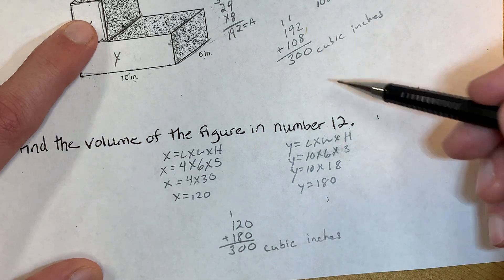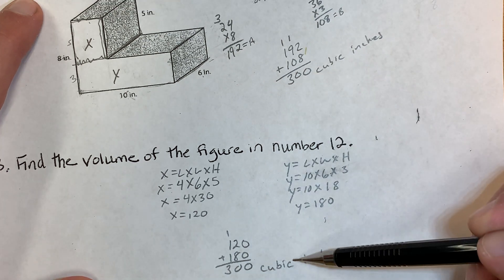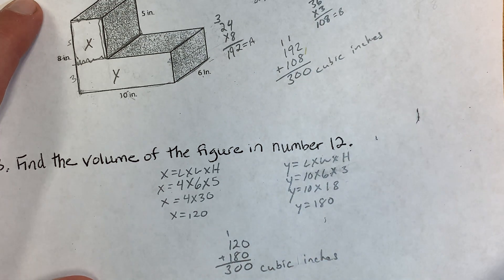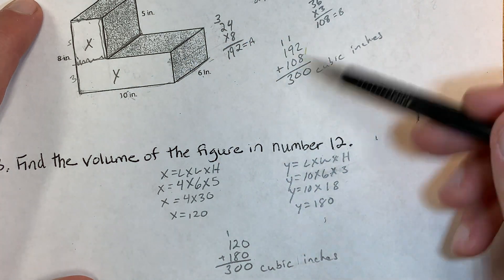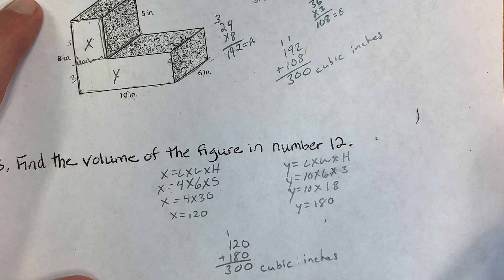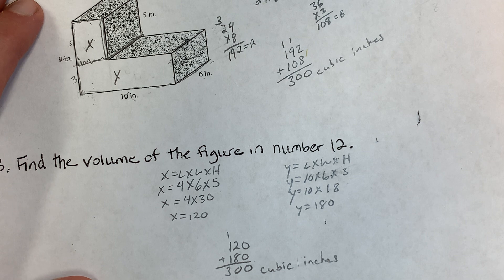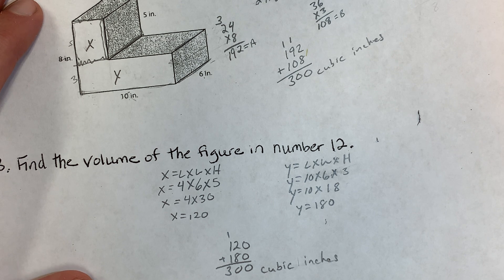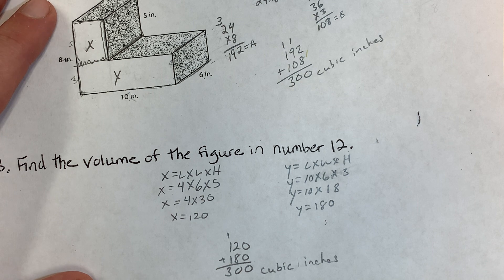Both methods give 300 cubic inches — they match, so I know I did it right. If they didn't match, that means I probably did one wrong and I'd have to go back and check. The shape did not change, just the way I cut it. I suggest you keep working these problems over and over — hide the answers, try them yourself, then check. These are the same types of questions you're going to see Thursday or Friday on your quiz.